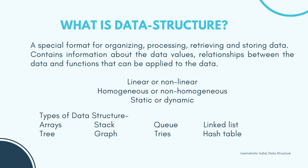Now let's see the types of data structures. Data structure types are determined by what type of operations are required or what kind of algorithms are going to be applied. The data structure types are: arrays, stacks, queues, trees, graphs, tries and hash tables.